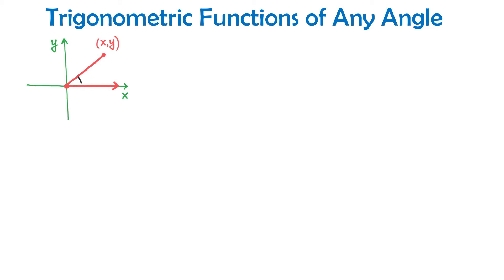We will call this angle theta. From this point we will draw a perpendicular down to the x-axis, forming a right triangle. In this triangle the bottom side is x and the right side is y. The hypotenuse we will call R, and it can be found using the Pythagorean theorem: R equals the square root of x squared plus y squared. Because this point is in quadrant 1, both x and y are positive.